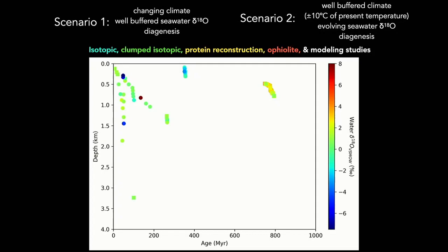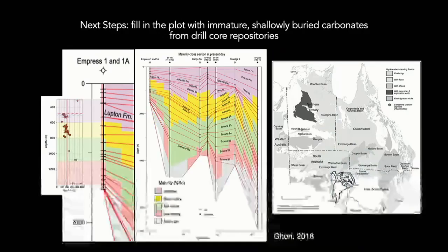We have a path forward, continuing to probe subsurface samples where we have a sense for their burial history and current borehole depth. This core from Australia shows how organic thermal maturity maps onto the clumped isotope temperature results: the coldest interval less than 40 degrees C sits within either the immature or early mature range for the organic material. As soon as we move into the mid-mature to late-mature range, the clumped isotope temperatures are warmer. We have a series of cores selected from various basins, particularly in Australia, because they're very generous with their core repositories and access, with many intervals of geologic time preserved in shallow immature wells.